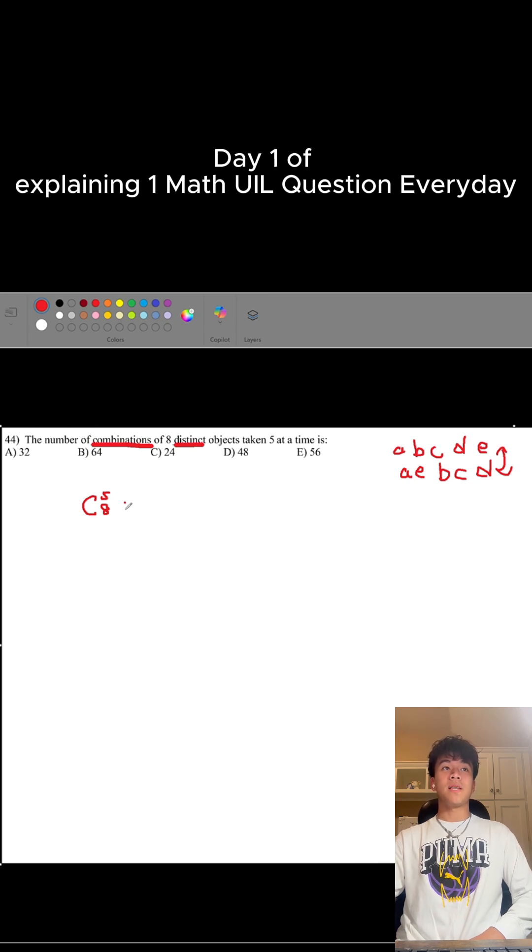How do you find the actual value? You find the product of descending numbers starting from 8, and 5 descending numbers from it. So it will be 8 times 7 times 6 times 5 times 4.